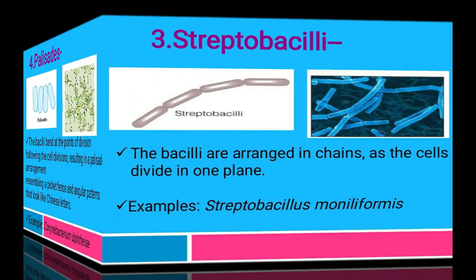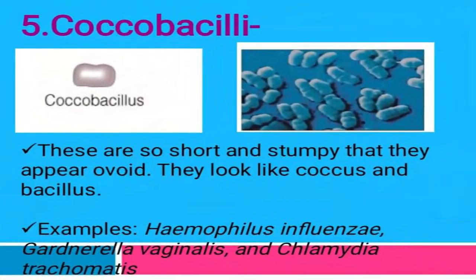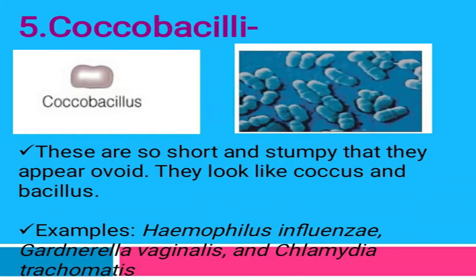The fourth arrangement is palisade cells. After division, the bacilli bend at the point of division and show an angular pattern like a Chinese letter arrangement, as you can see in the image. The example is Corynebacterium diphtheriae.